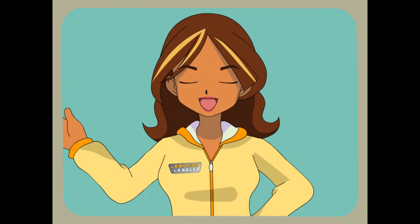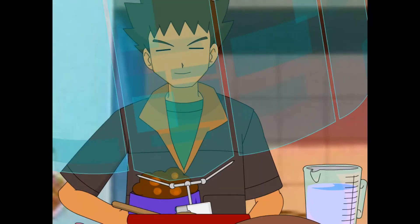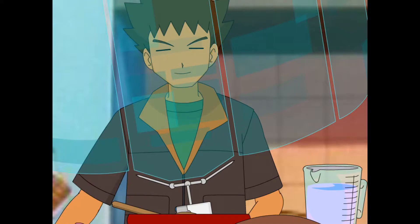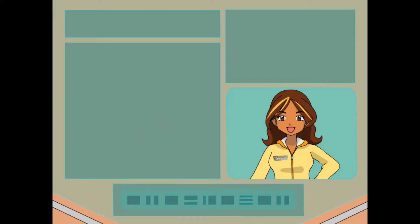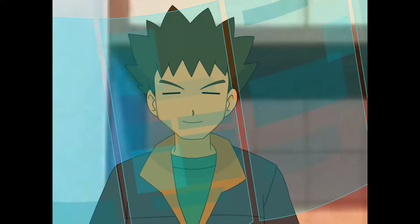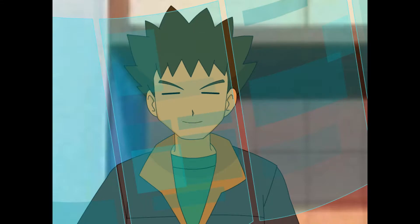Ada? Hi, Brock. What's cooking? New recipes. I gave my Pokémon some new food to try. I want to see what they liked best, so Max wrote down what they ate. But they're all different fractions. What are the amounts? Two-fifths, three-fourths, one-third. Oh, I see the problem. The denominators are all different. Right. That's the bottom part of the fraction. When fractions have the same denominator, it's easy to see which one is larger or smaller. But what about now?